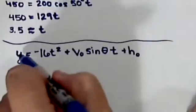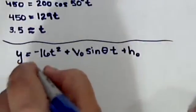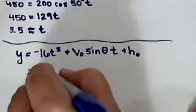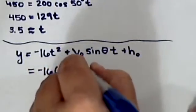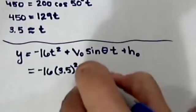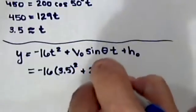All right, we want to know how high it is, the y, so we'll just plug the rest of these numbers in here. Negative 16, we just calculated our t is 3.5. Our initial velocity is 200.